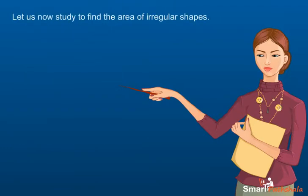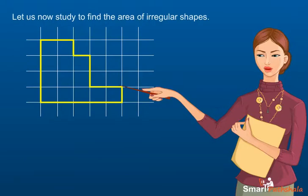Let us now study to find the area of irregular shapes. Consider a shape drawn on a graph paper of squares of side 1 centimeter as shown here.